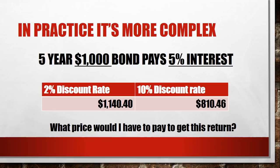Whereas if you're happy with two percent — say the returns in the bank are two percent — then this bond, to earn a comparable rate of return, you would need to pay that amount. If you can get a fantastic ten percent rate in the bank, you're not going to pay full price for this bond. You need a substantial discount in order to increase the return from five percent up to the ten percent that you require.